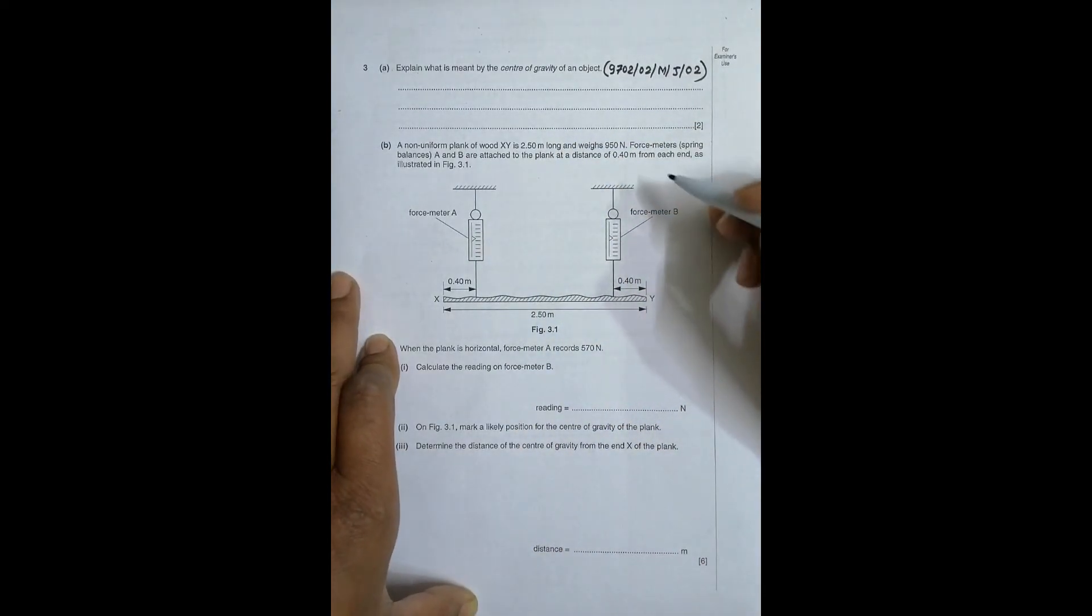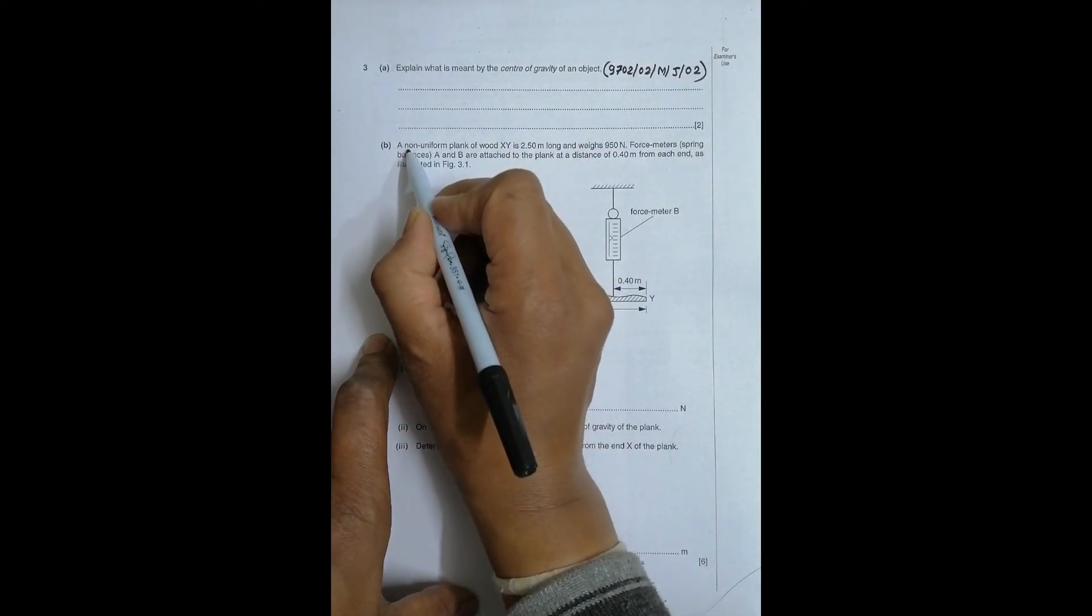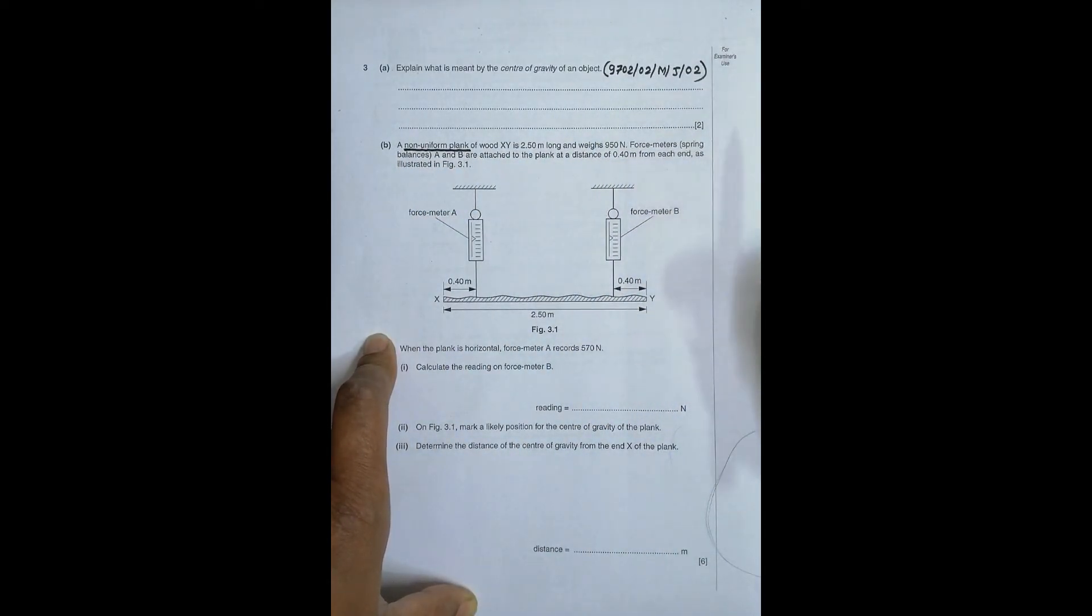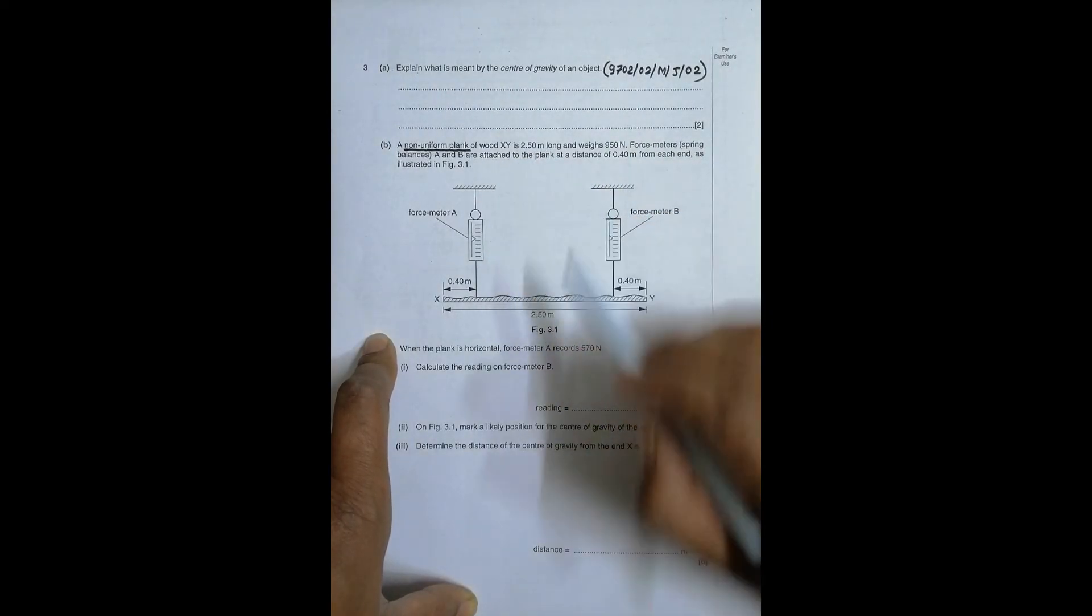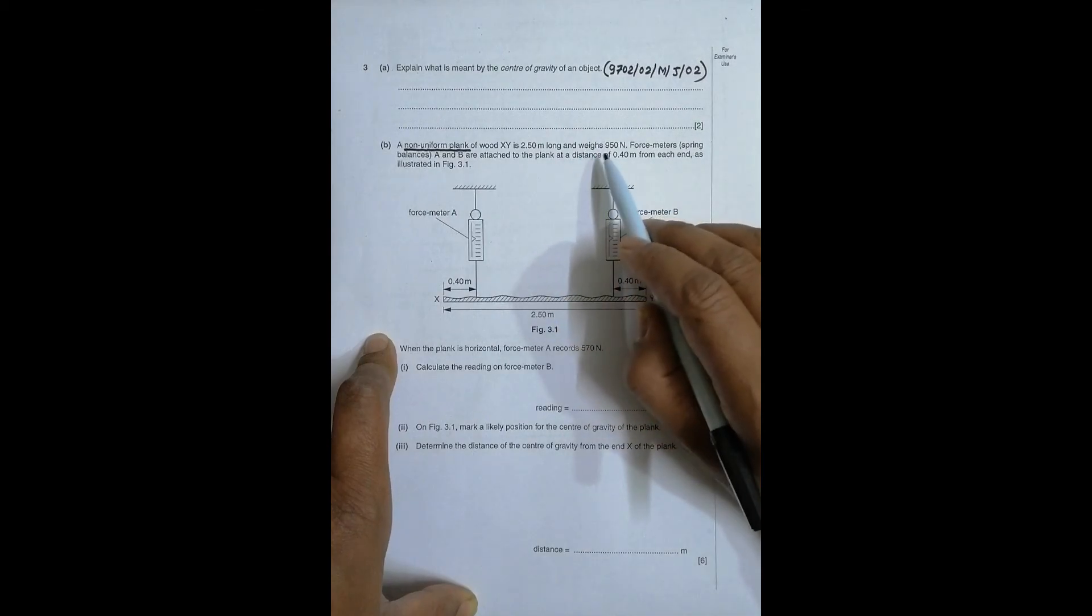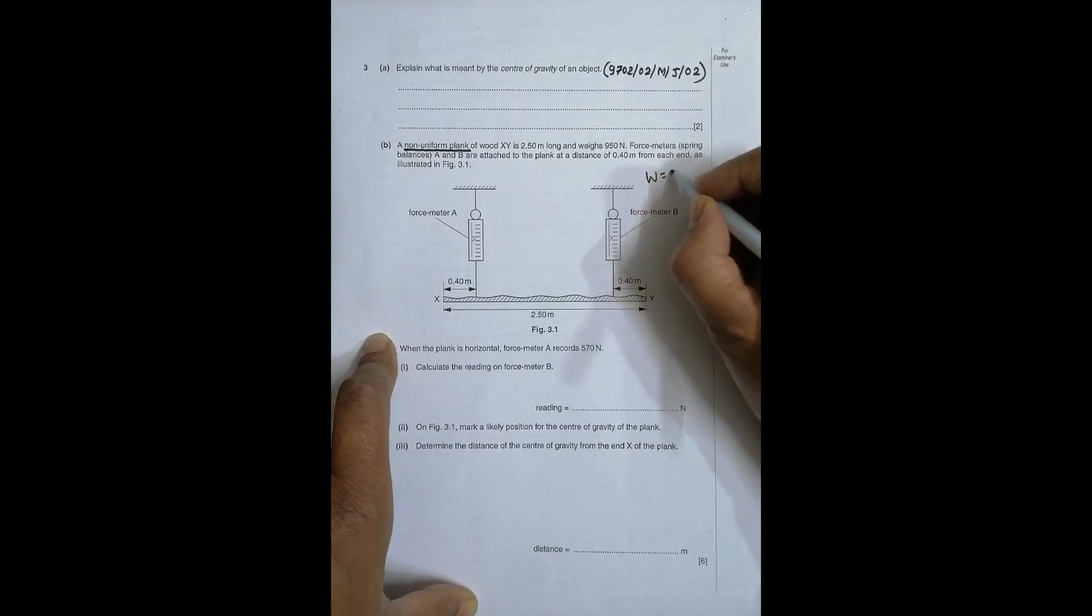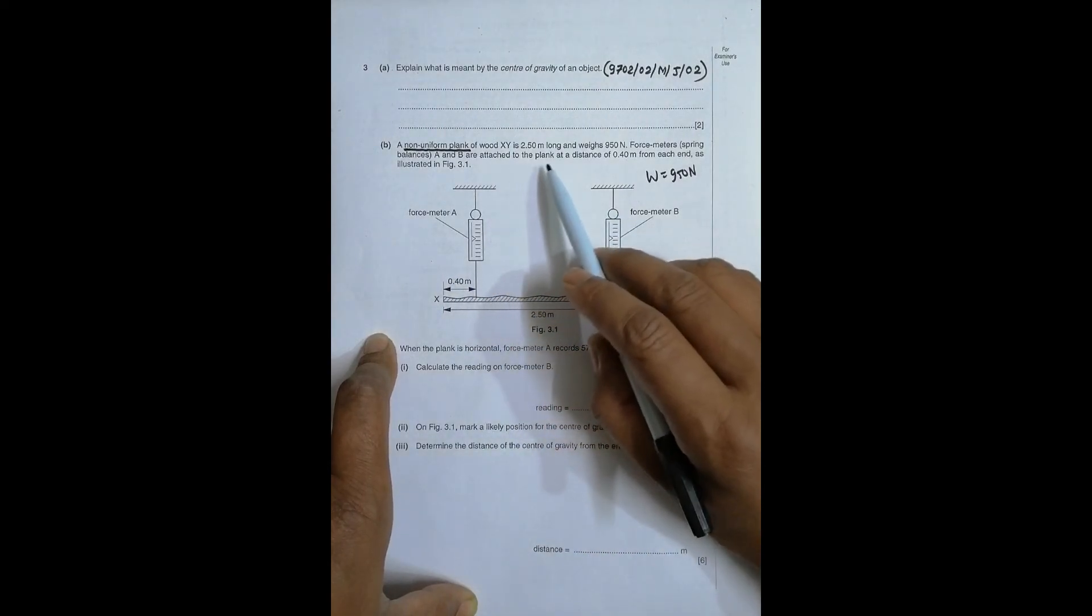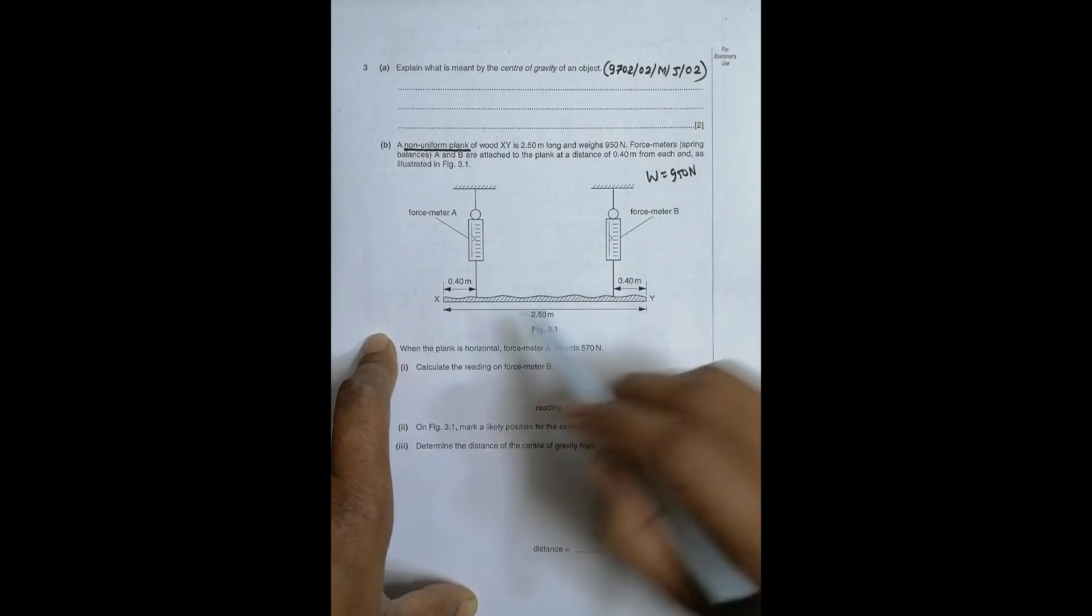Now the main item is in the whole question. In 3B I have got a non-uniform plank. We have to take care of this word which means non-uniform. It means its center of gravity will not be exactly at the middle. The weight of this thing is equal to 950 Newton. Force meters or spring balances A and B are attached to the plank at distance of 0.40 meter from each end.